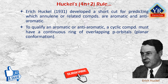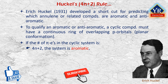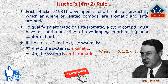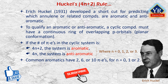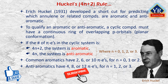Hückel's rule says that if the number of pi electrons in the cyclic system is 4n+2, the system is aromatic. If it is 4n, the system is anti-aromatic, where n is an integer, commonly 0, 1, 2, or 3. Cyclic, fully conjugated planar molecules with 4n+2 pi electrons are aromatic. Common aromatic systems have 2, 6, or 10 pi electrons. Anti-aromatic systems might have 4, 8, or 12 pi electrons.